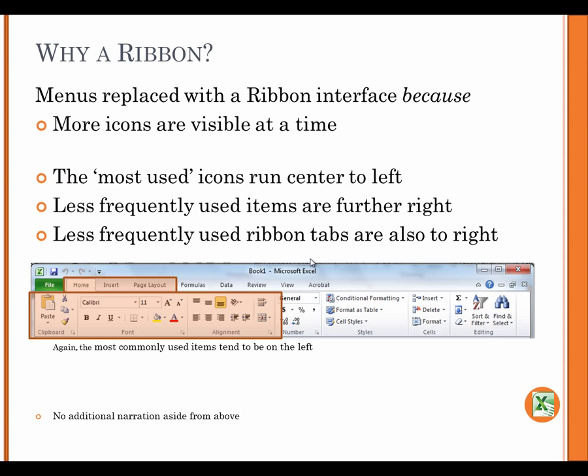Why a ribbon? The menu is replaced with a ribbon interface because more icons are visible at a time. The most used icons run center to left. Less frequently used items are further right. Less frequently used ribbon tabs are also to the right. Again, the most commonly used items tend to be on the left.